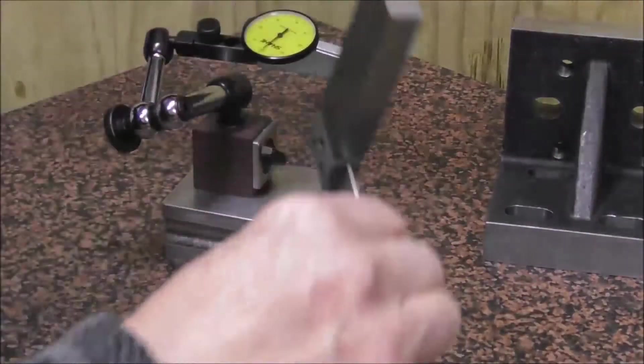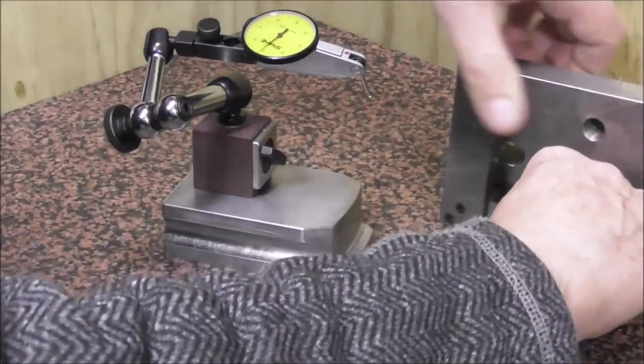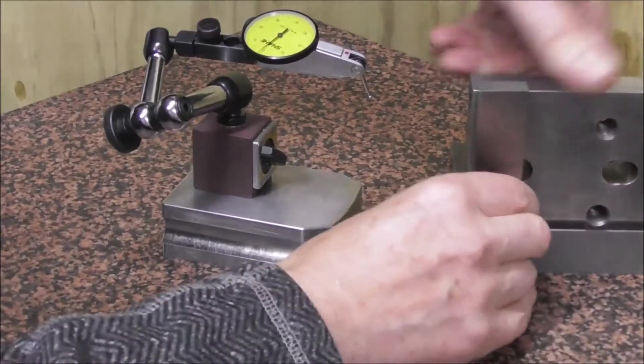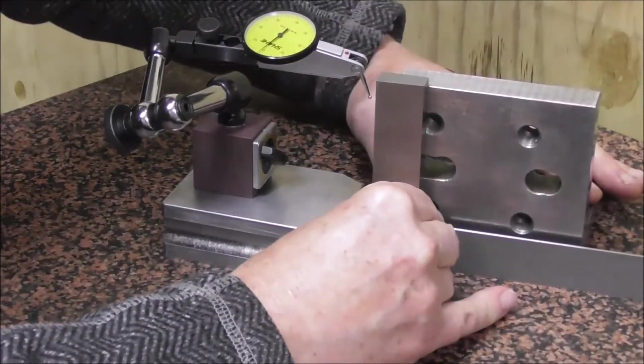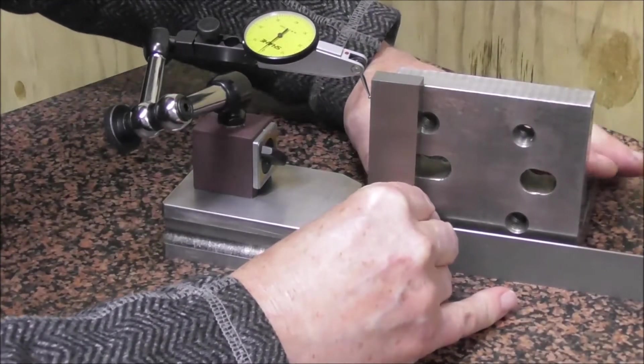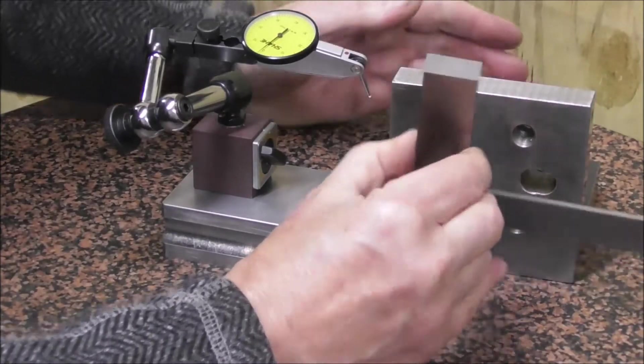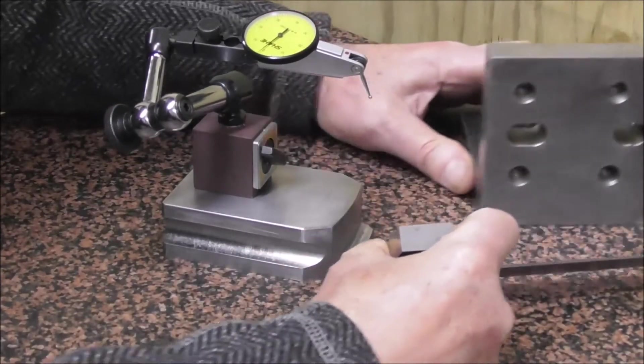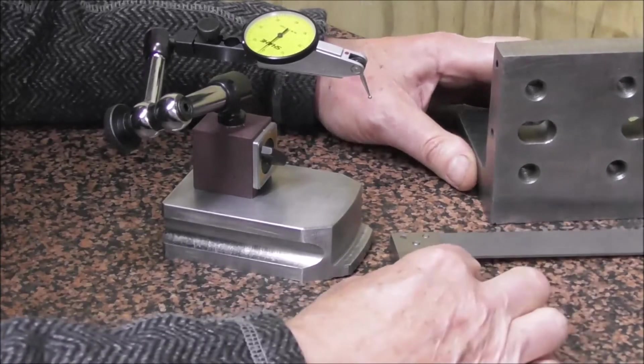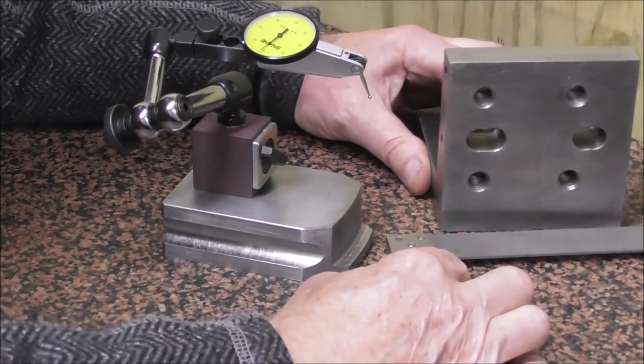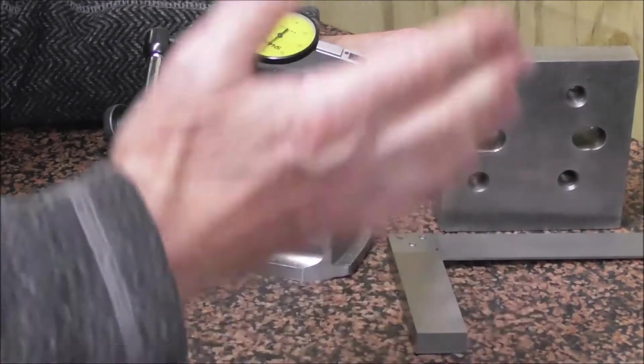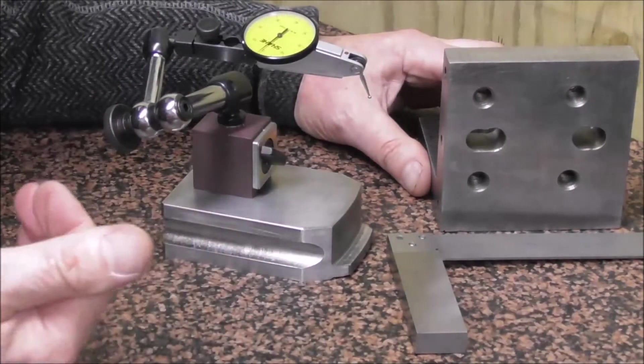So you're using a generating process with a parallel to set your comparator at 90 degrees. Then when you want to come and check your square, we can come in now and we can check our square and we can get a definitive measurement that says, wow that square I've had all these years is actually a thou out. It's a thou acute or a thou obtuse. So this is a very useful measuring instrument.